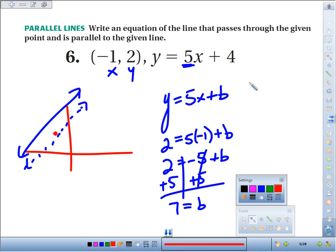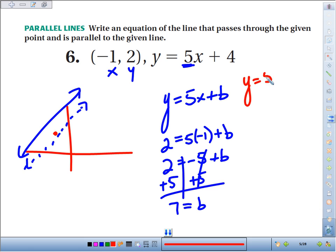So our full equation would be y equals the same slope to be parallel, 5, times x, and we figured out our new y-intercept would be 7. It's parallel to the given equation. It goes through the point negative 1, 2.